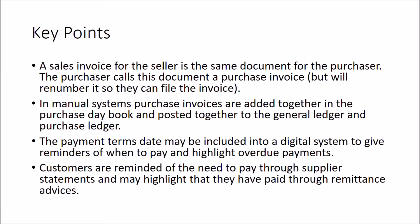The key points from this chapter are: the sales invoice for the seller is the same document for the purchaser. The purchaser calls this document a purchase invoice, but will renumber it so they can file the invoice. In manual systems, purchase invoices are added together in the purchase daybook and posted together to the general ledger and purchase ledger.